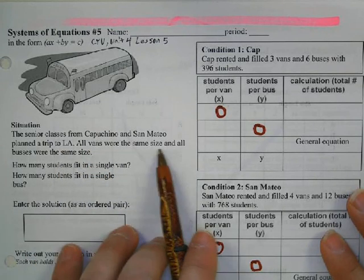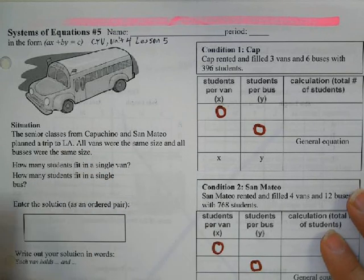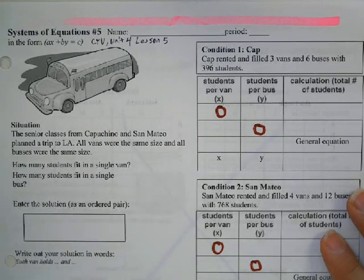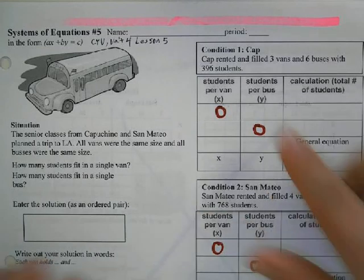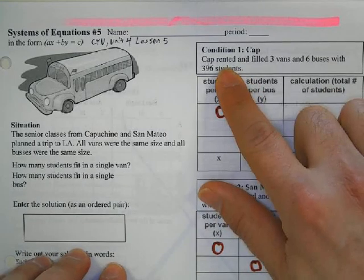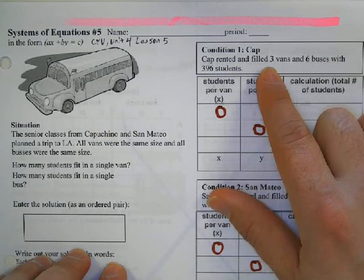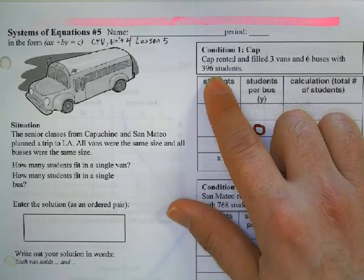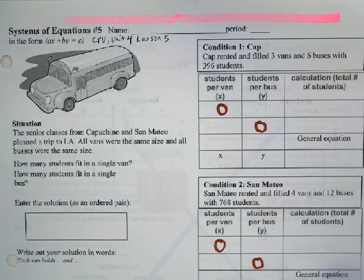All the vans were the same size and all the buses were the same size. How many students fit in the van? How many students fit in the bus? So we've got the Cap condition where Cap rented three vans and six buses with 396 students.